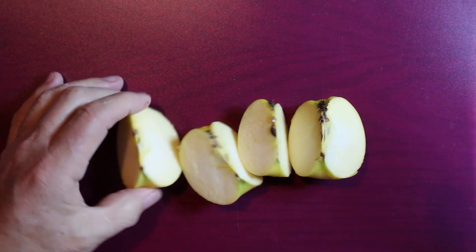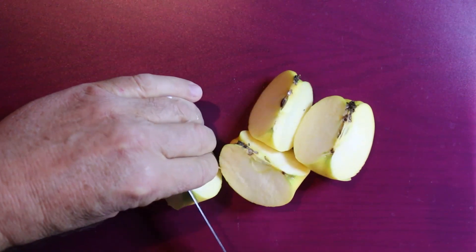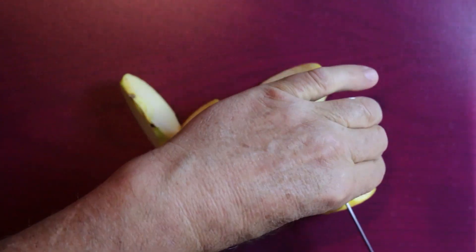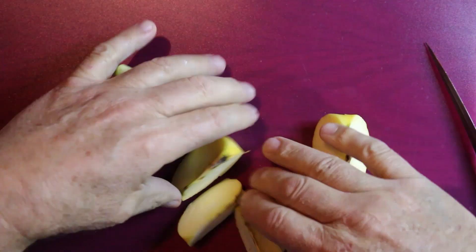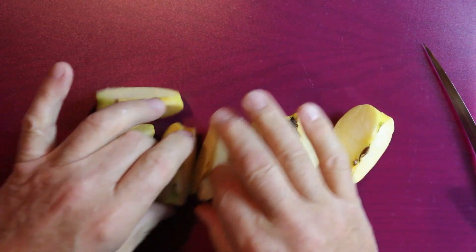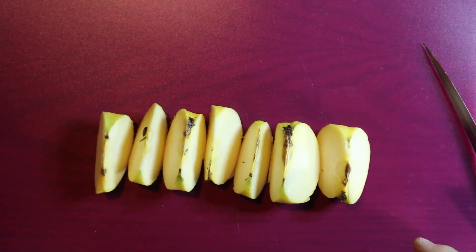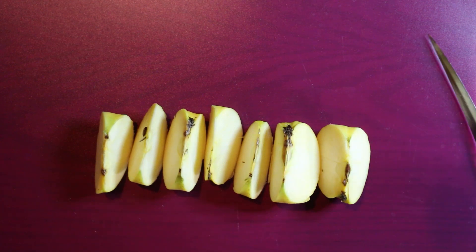If we take each quarter and cut them in half, now we have in theory eight eighths. They're not equal, but we're not doing a science project.